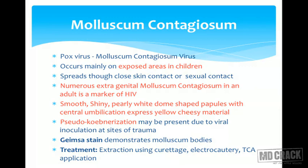Pseudo-Koebnerization may be present, as viral particles inoculated at sites of trauma can cause lesions where the patient scratches. Giemsa stain demonstrates molluscum bodies. Treatment includes extraction by curettage or electrocautery. In children, TCA application or 10% KOH application can be used — this is called chemical cauterization.